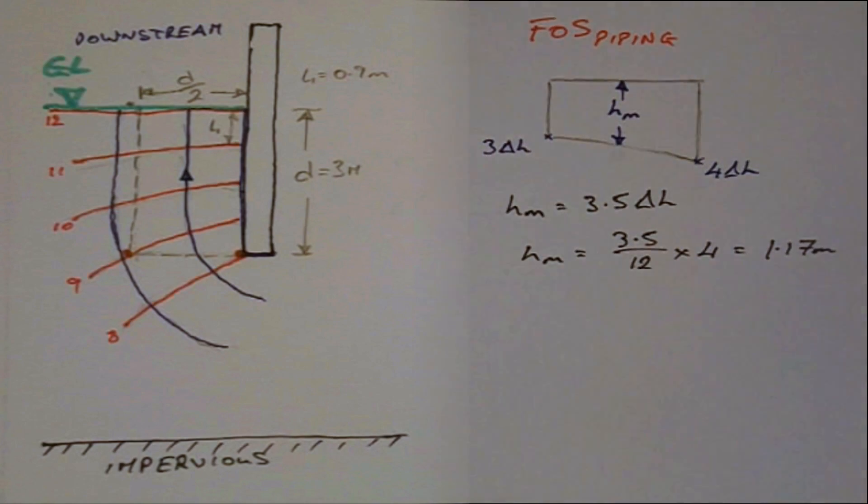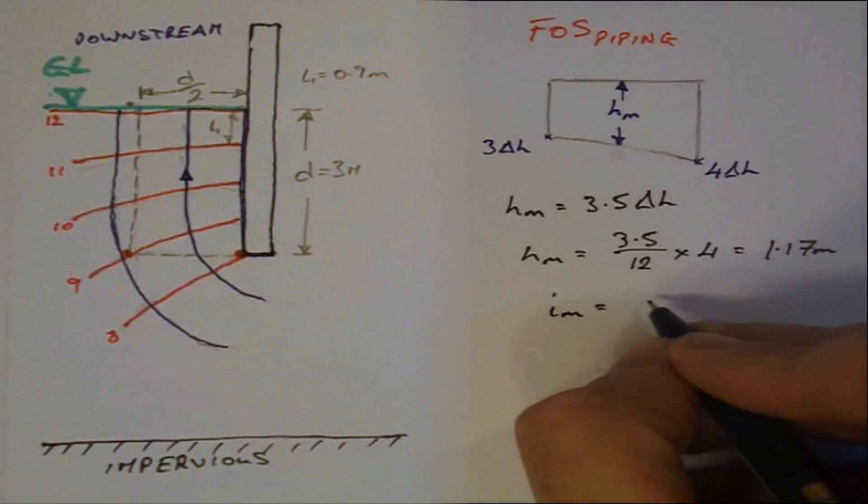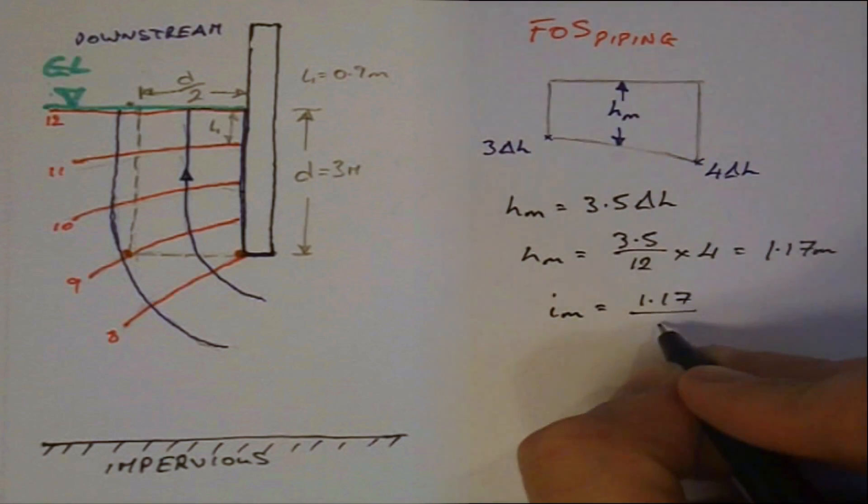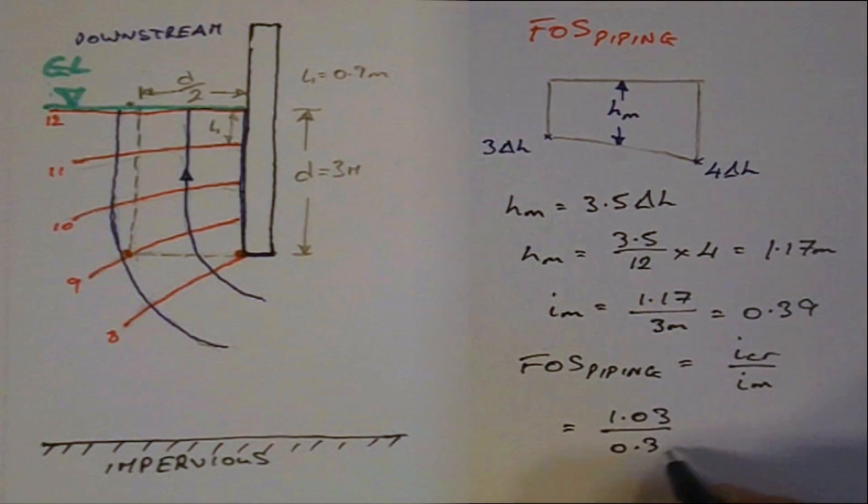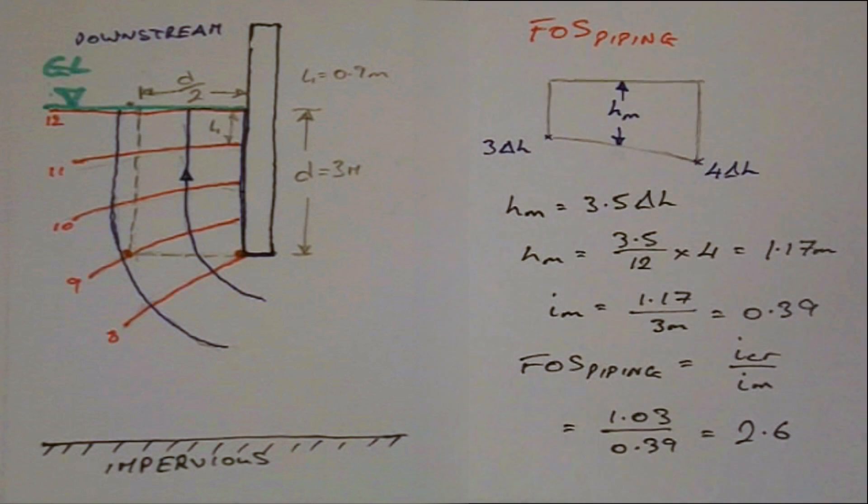The mean hydraulic gradient is equal to H mean divided by the depth of the prism, giving I mean equal to 0.39 and hence a factor of safety equal to 2.6, which is lower than the factor of safety for boiling calculated for this element.